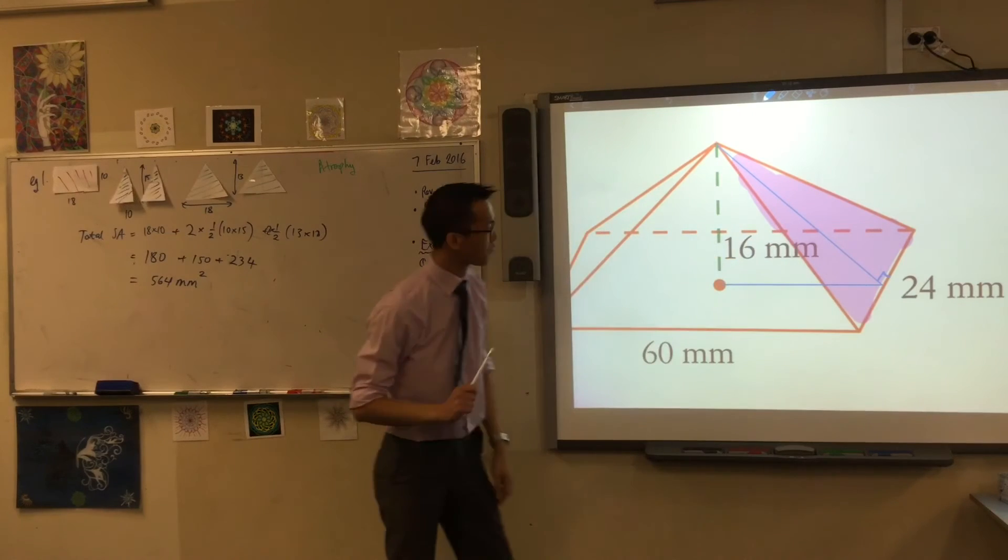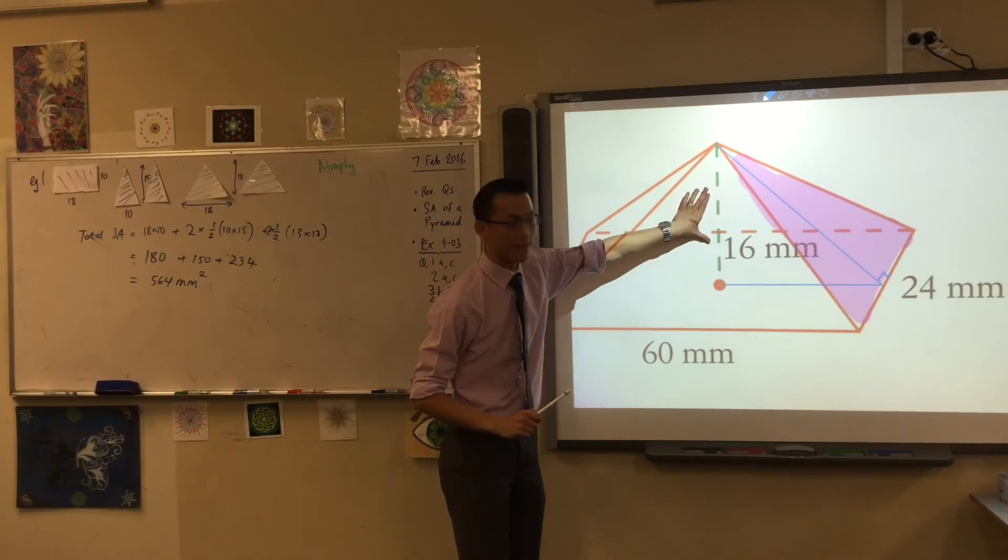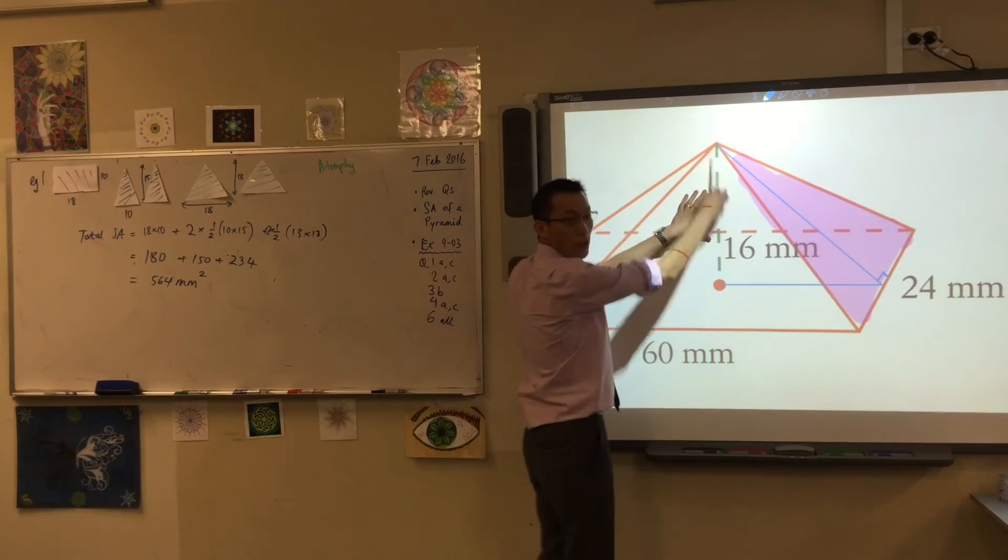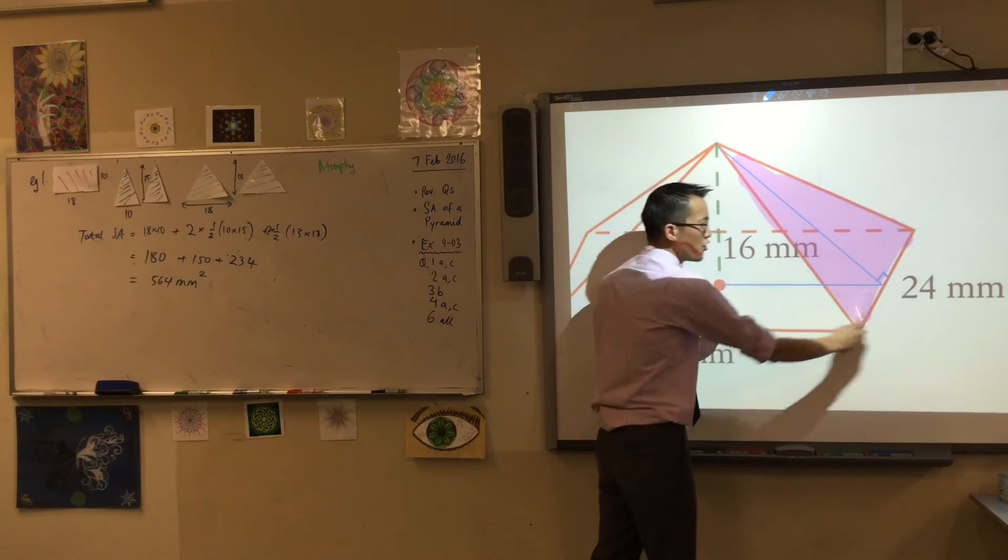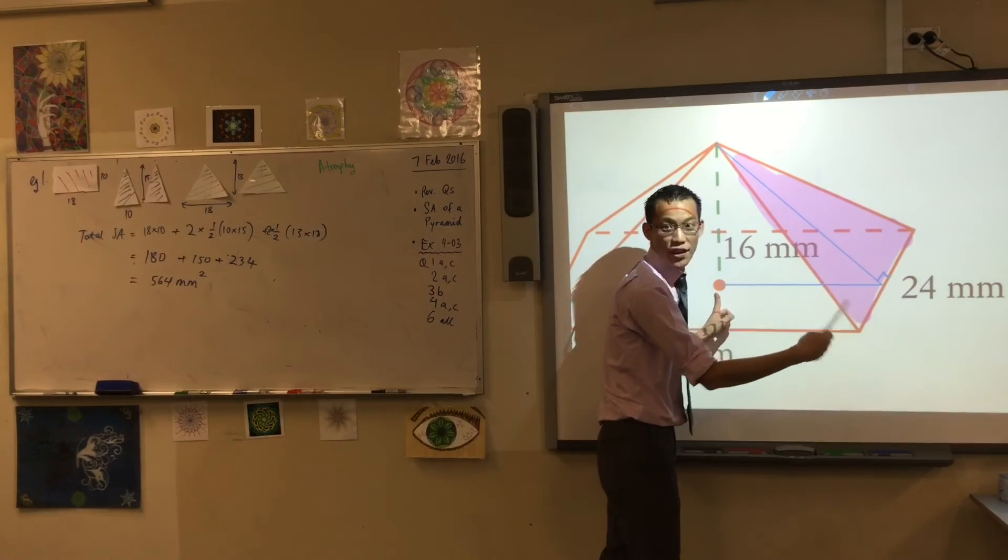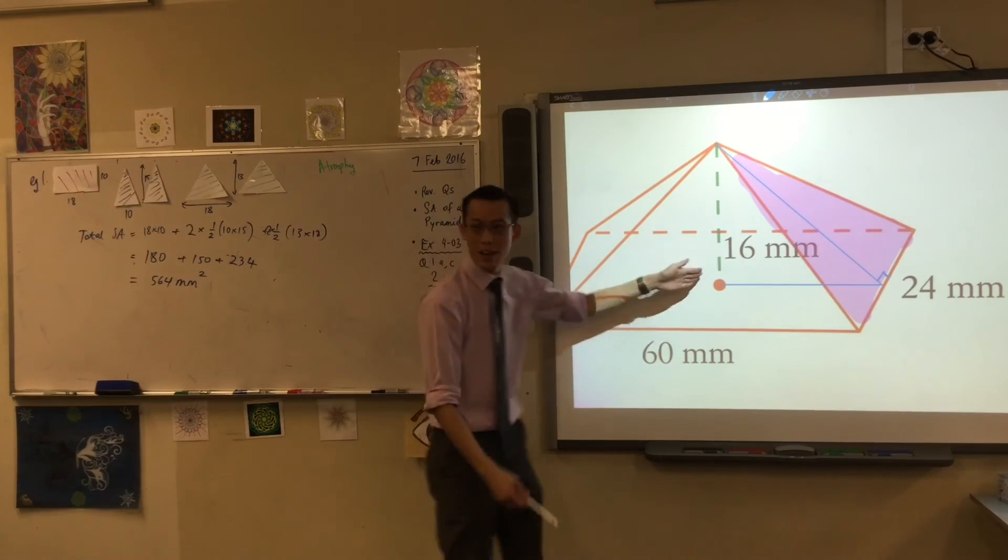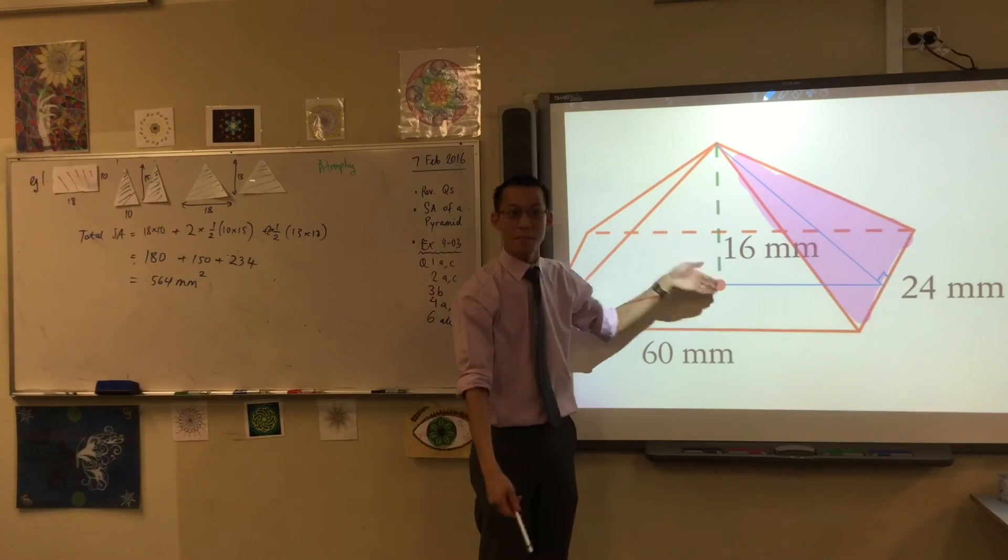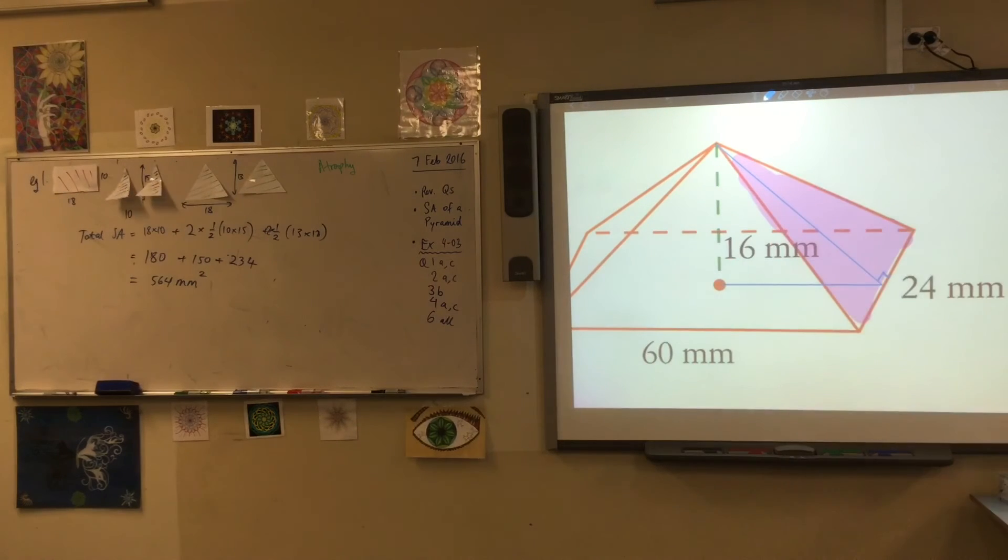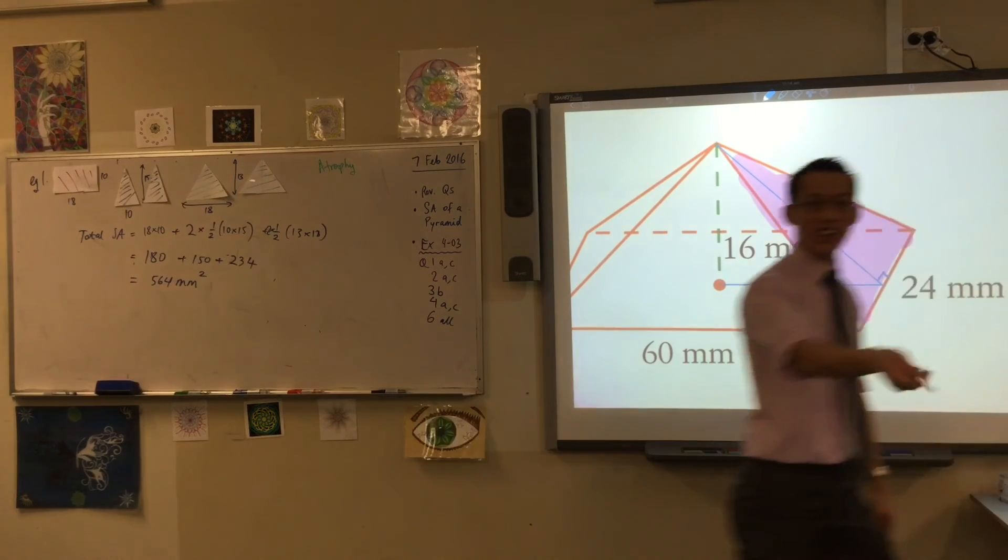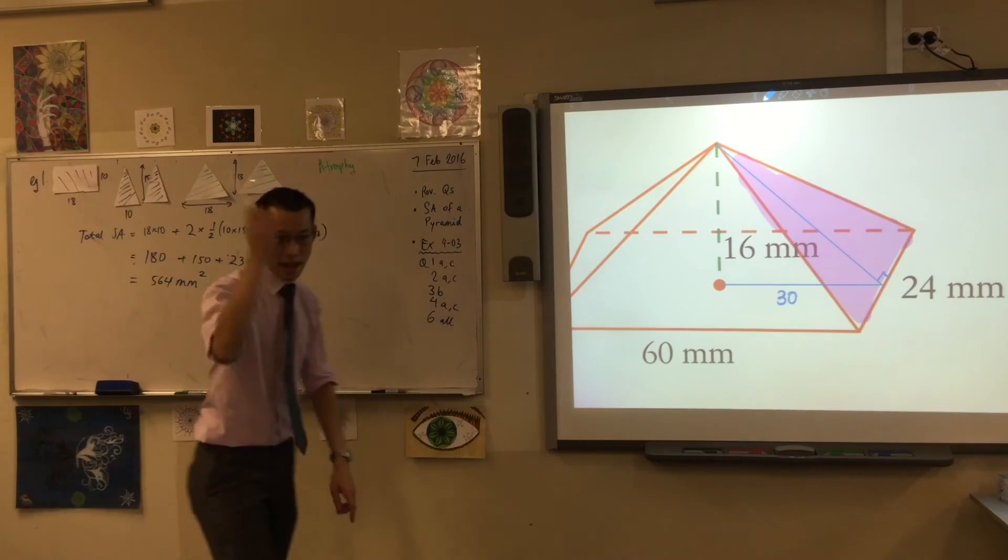Isabella, what do you think? Yeah, good. So I've got this 16. I don't know what this is just yet, but I can find out very easily. It's half of 60, right? Because as Sarah said, it's right in the middle of the pyramid. So therefore, I can say that's 30 down there. And you can go ahead and use Pythagoras.